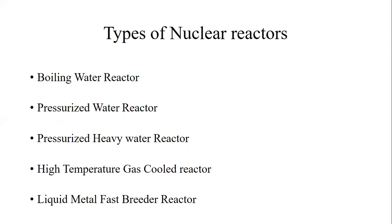Let's see some commercialized nuclear reactors which have been used for nuclear power plants. First is the boiling water reactor, pressurized water reactor, pressurized heavy water reactor, high temperature gas cooled reactor, and liquid metal fast breeder reactor. Apart from this, we have some reactors for research purposes, some reactors for military applications, and different small types of nuclear reactors — even for big ships or submarines.